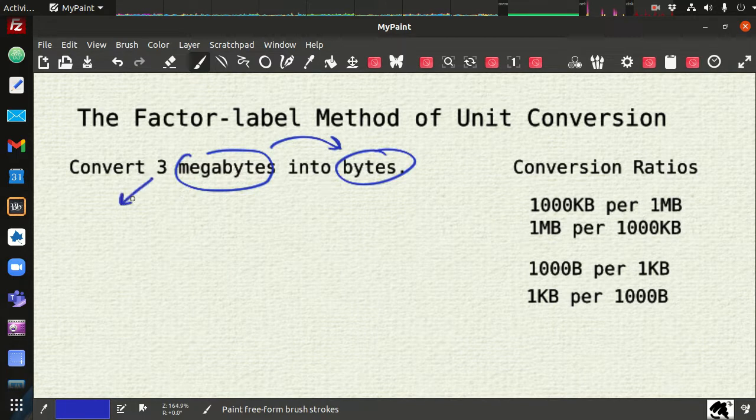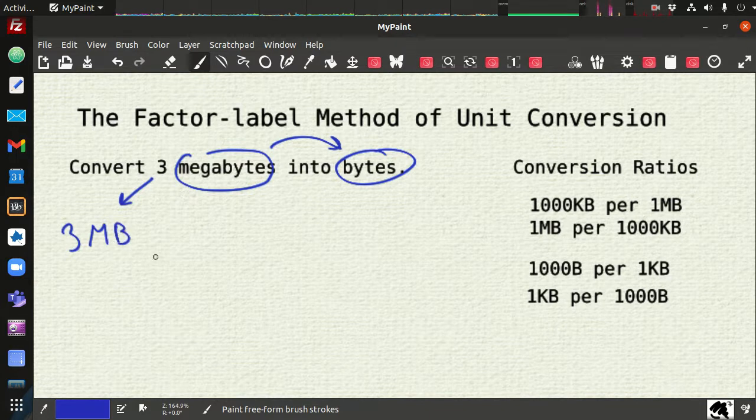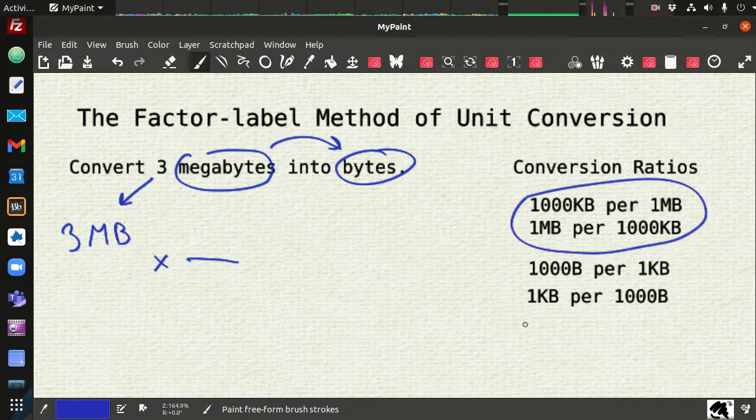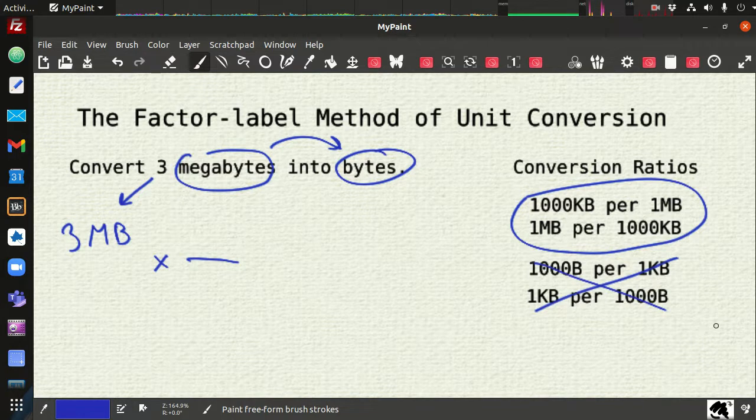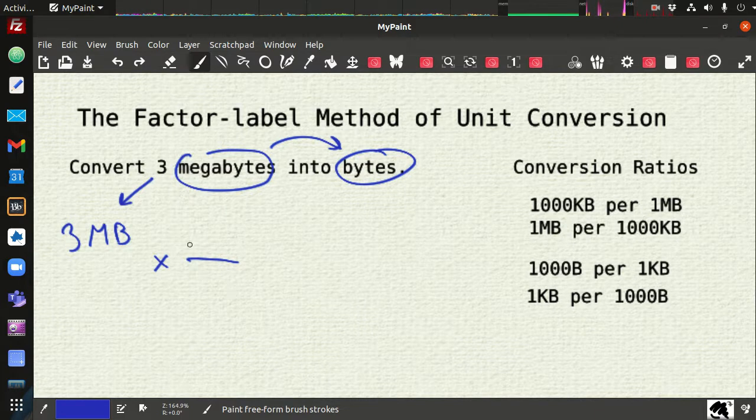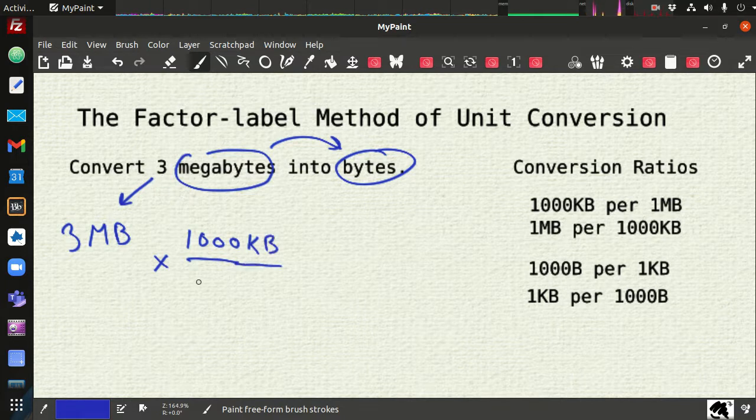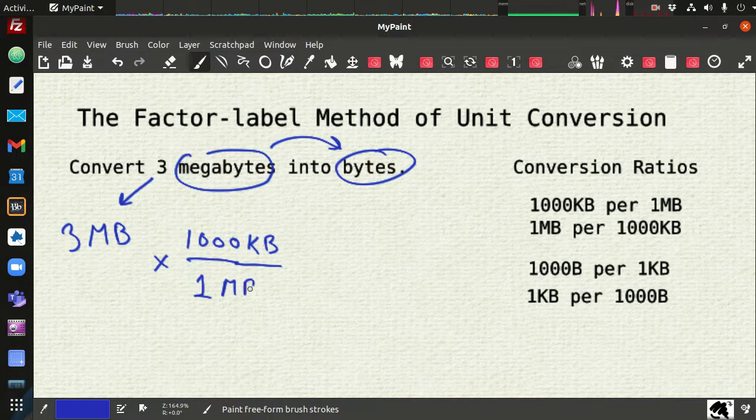And so we begin with our known quantity. We have three megabytes. And we want to multiply by some equivalence ratio, some conversion ratio. If we want to go from megabytes, which one of these has megabytes in it? This one. There's no megabytes in this conversion. So megabytes, we want to be on the denominator. So that means a thousand kilobytes has to be on top. And that's per one megabyte. And then we see that the megabytes will cancel out.